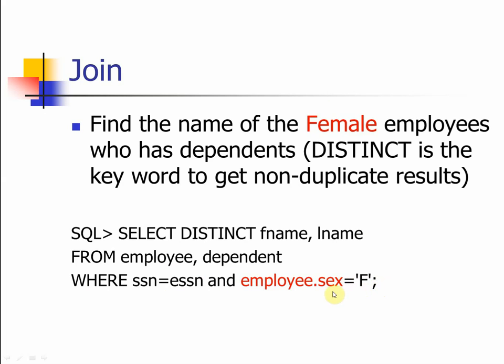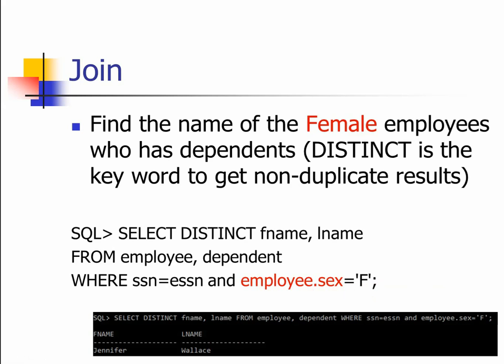There are two special things to note. The reason I'm using employee.sex is because in the dependent table there's also a sex attribute, so by specifying employee.sex, Oracle knows precisely which attribute you mean. The condition is that it equals 'F' for female. If you don't use employee.sex, Oracle will give you an error message indicating it has no idea which attribute you're referring to, since both tables have an attribute called sex.